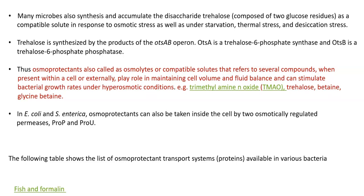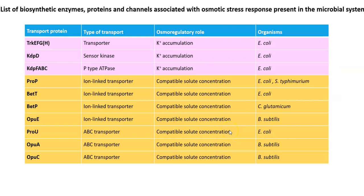In E. coli and Salmonella enterica, osmoprotectants can also be taken inside the cell by two osmotically regulated permease systems including PROP and PROU. The following table shows the different types of transport proteins, their mechanism of transport, and their respective osmoregulatory role in particular organisms.